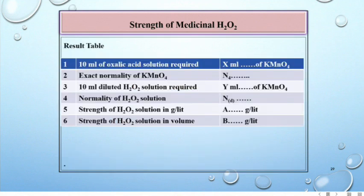Result table: 10 ml of oxalic acid solution required X ml of permanganate. Exact normality of permanganate equals N4. 10 ml diluted H2O2 solution required Y ml of permanganate. Normality of H2O2 solution: ND. Strength of H2O2 solution in grams per liter: A. Strength of H2O2 solution in volume: B.